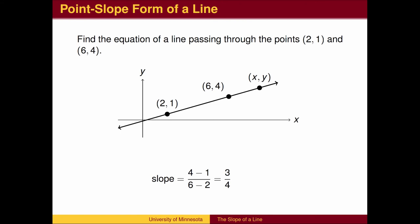We can also write the equation of a line containing two points as follows. First, find the slope between the two known points. The line is the set of all points whose slope to some fixed point on the line is given. In this case, we use the two known points to calculate the slope of 3 fourths.